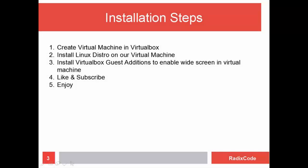Let's see what we are going to do in this video. First of all, we will create a virtual machine in VirtualBox, and after that we will install Linux in VirtualBox. After installing Linux, we will install VirtualBox Guest Additions to enable widescreen for our Linux distribution.